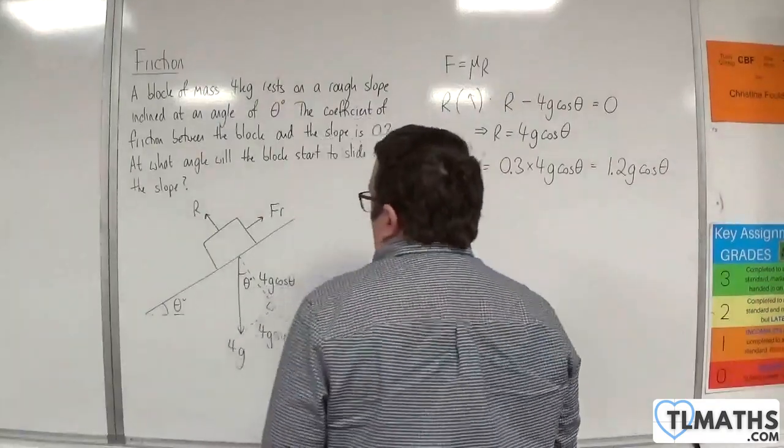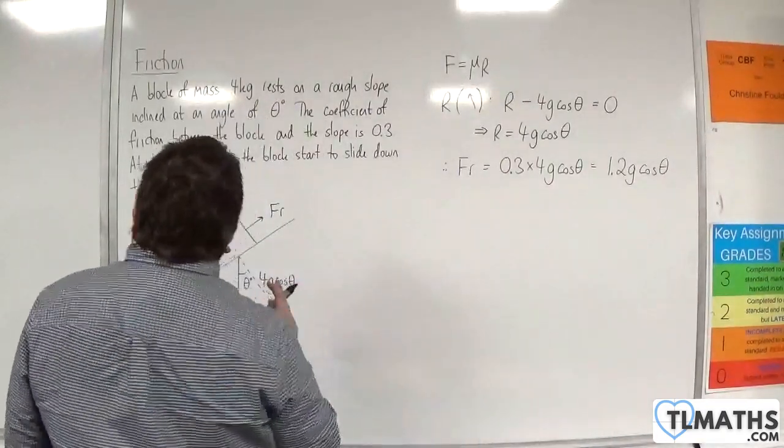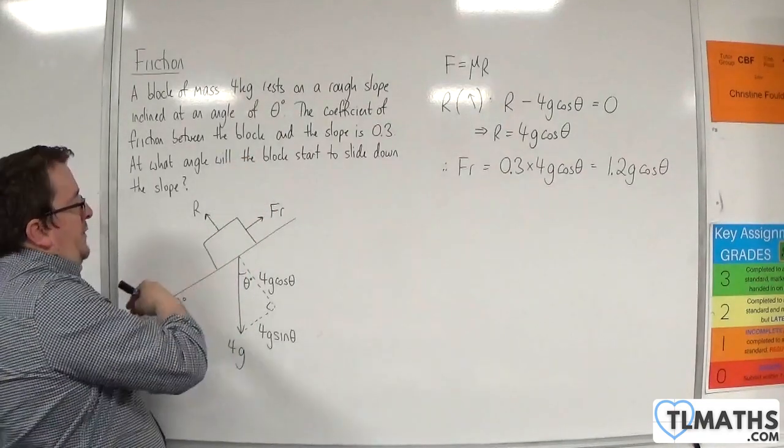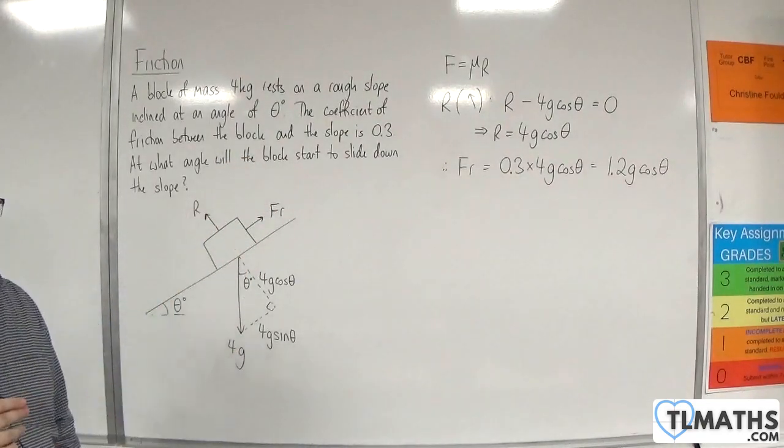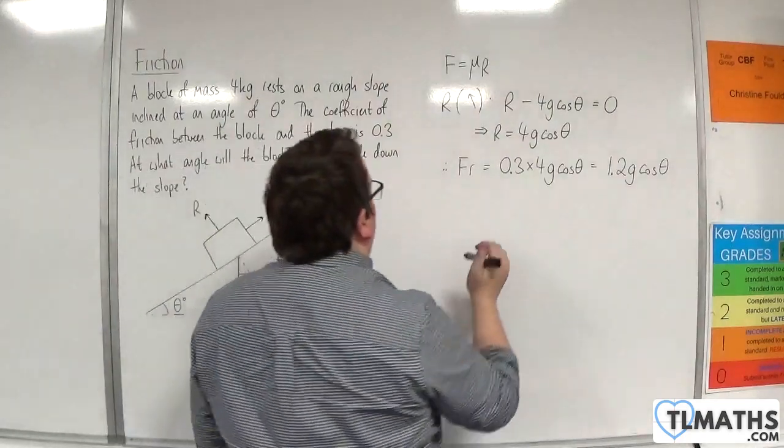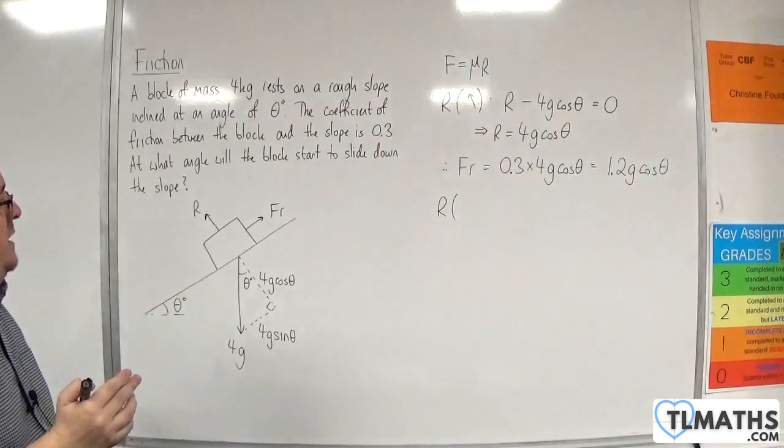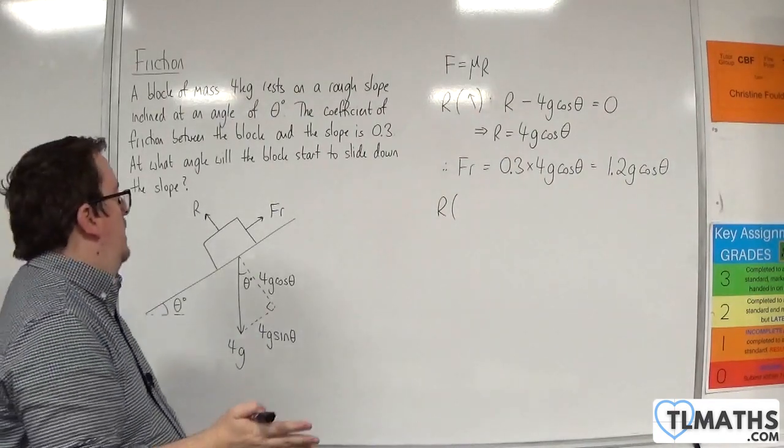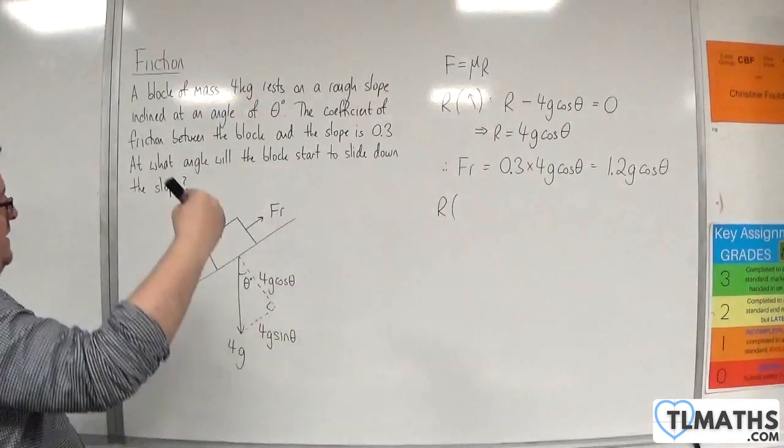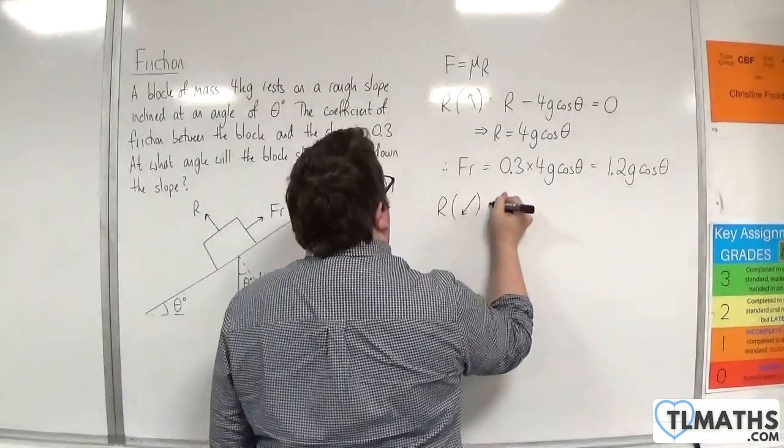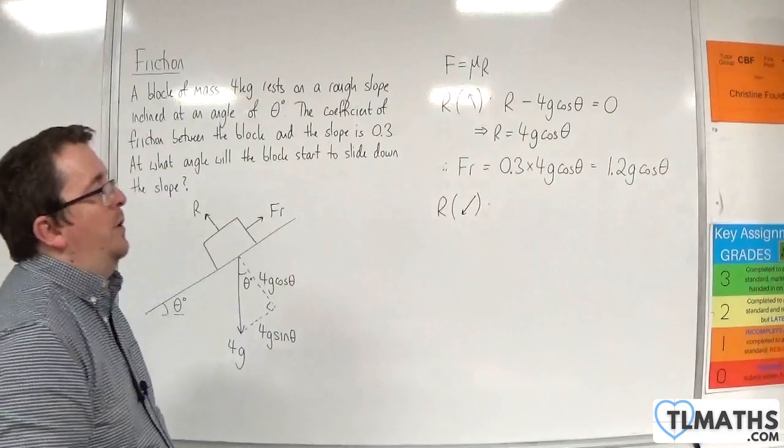Okay, now, if the block isn't moving, then that means the forces down the slope must counteract the forces going up the slope. So I'm going to resolve this time. Now I could take upwards as positive, or I could take downwards as positive. I'll take downwards as positive, I think, because that seems the more natural direction. That's the direction that the block is trying to go.